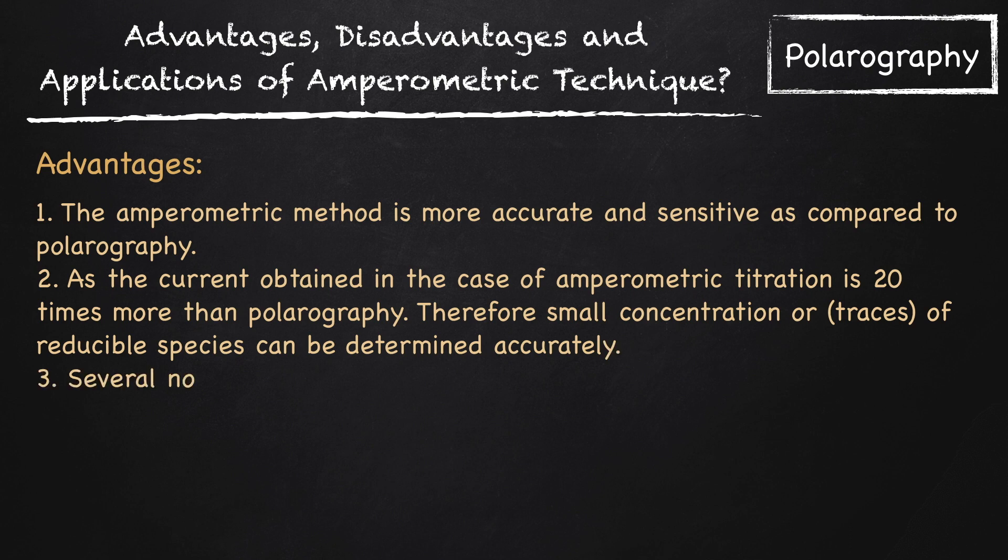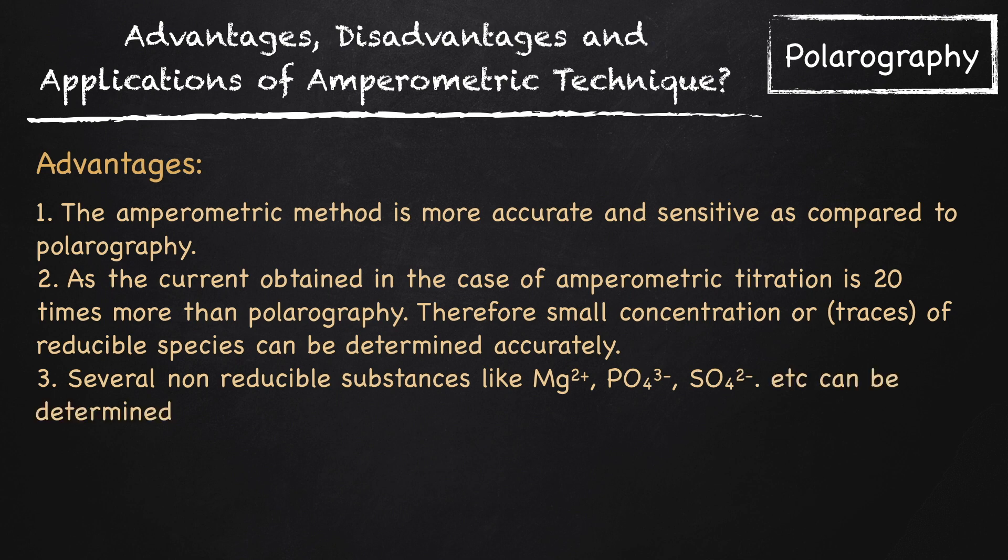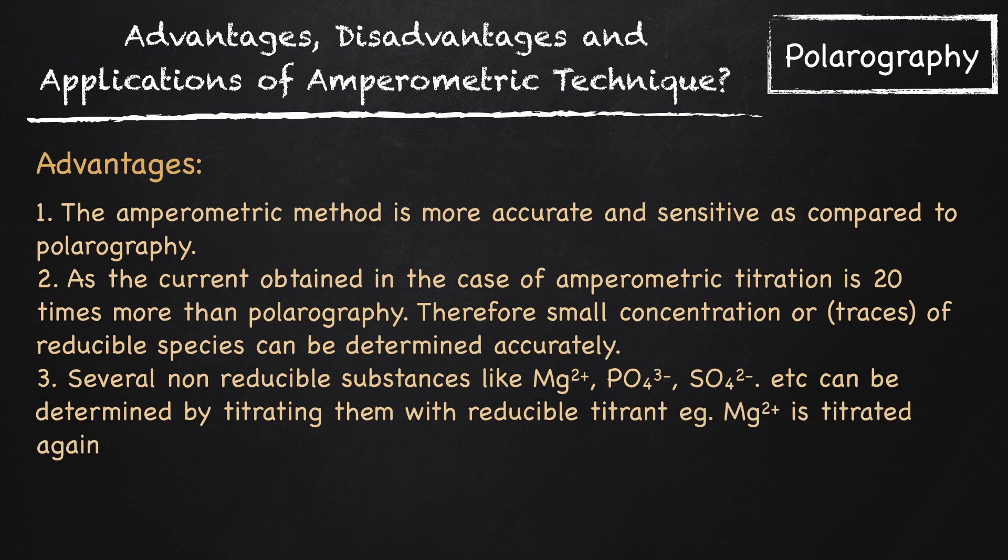Several non-reducible substances like magnesium, phosphate, sulphate, etc. can be determined by titrating them with reducible titrant. For example, magnesium is titrated against the reducible oxyme reagent, which gives a diffusion current.